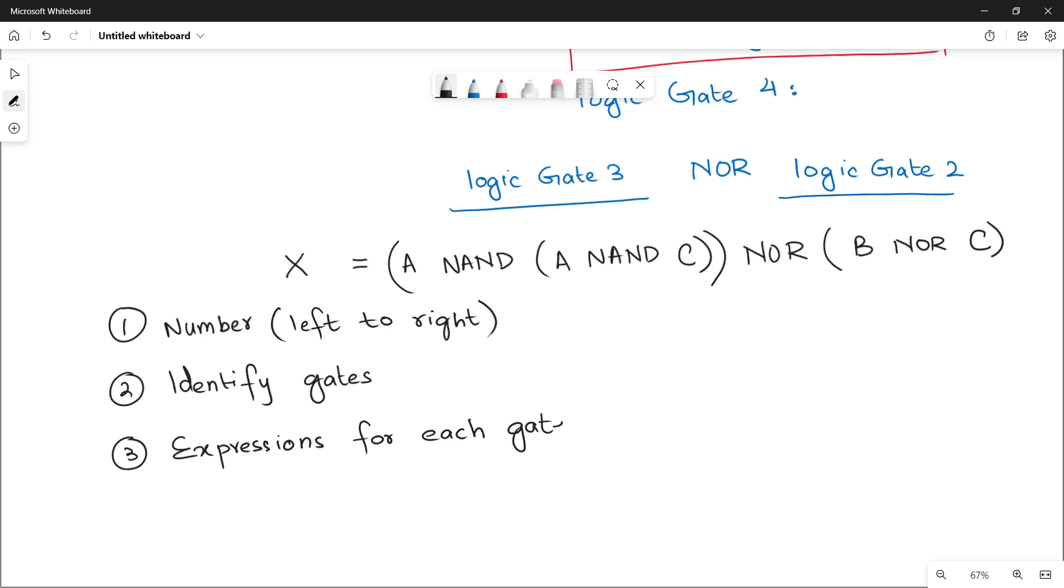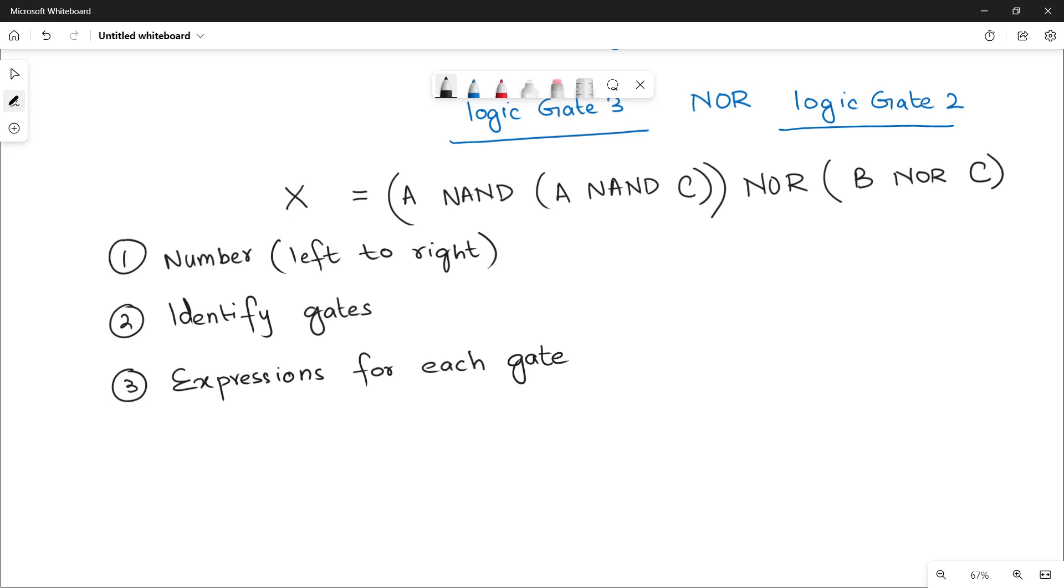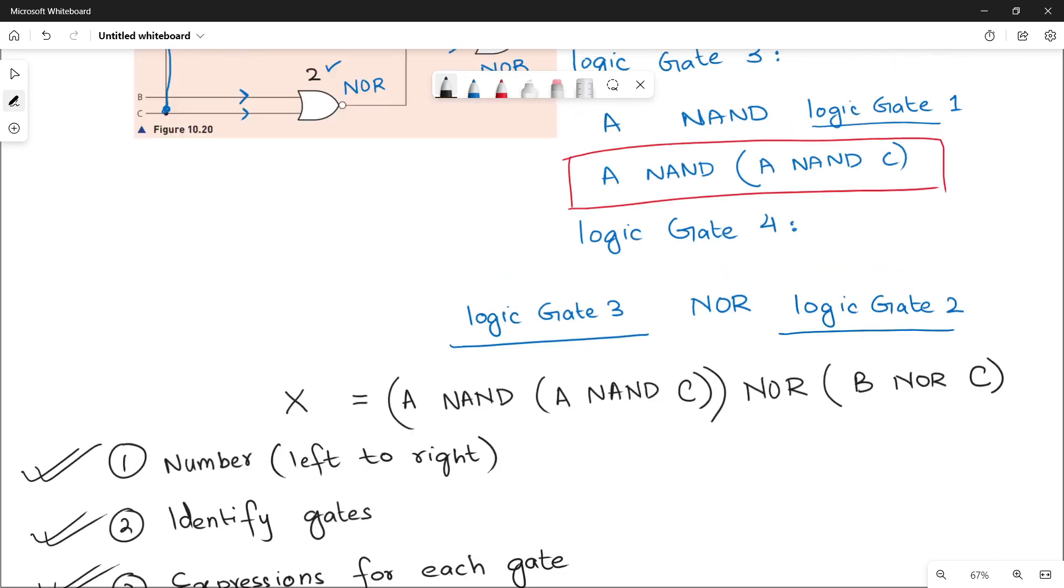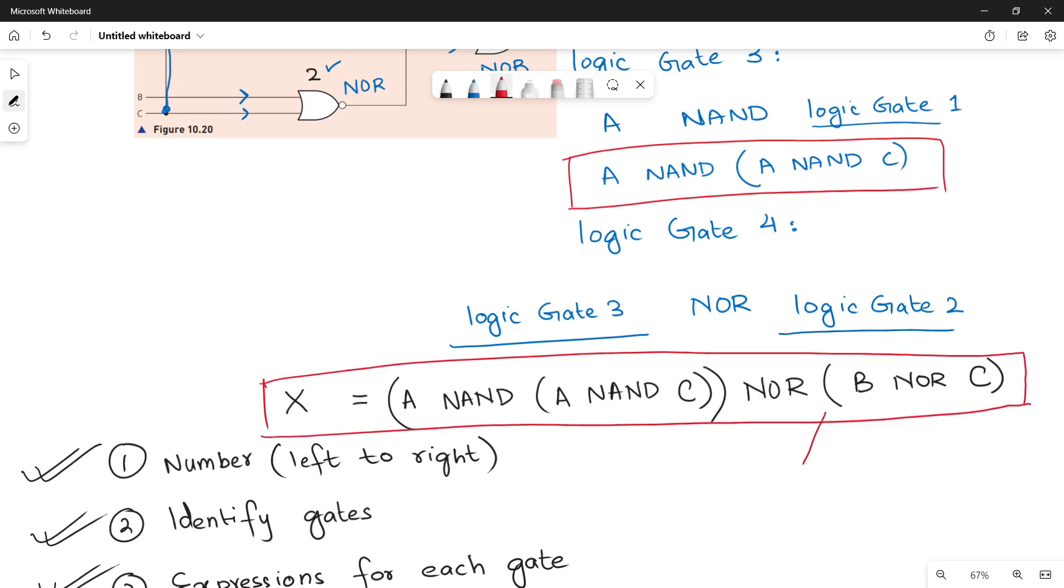When you will be writing expressions for each of the gates, then finally you will get the expression of your final logic gate in the logic circuit. These are the three steps in order to find out logic expression of any logic circuit. So this is your final result. And remember not to forget these brackets wherever necessary.